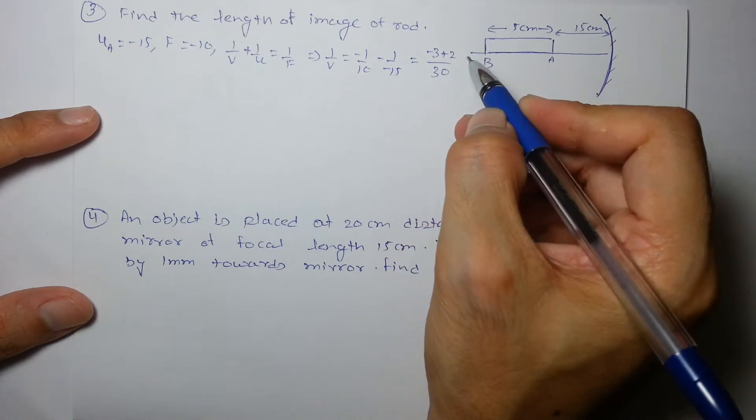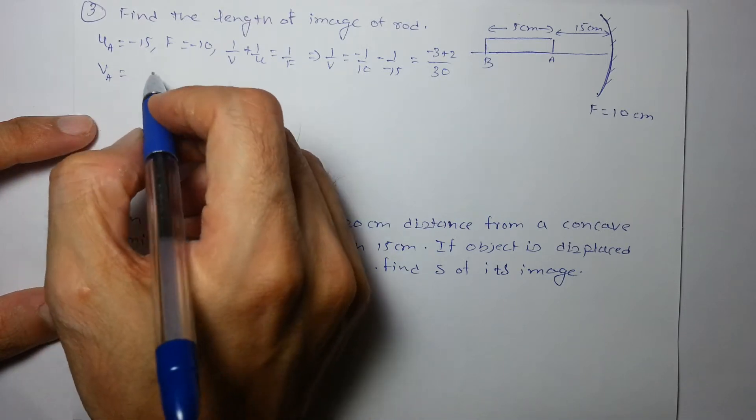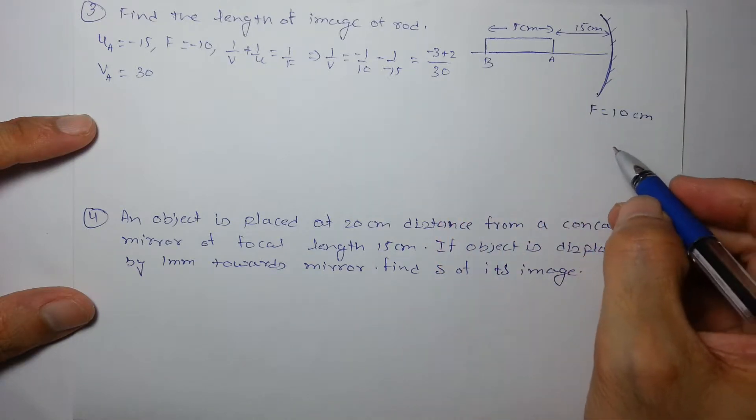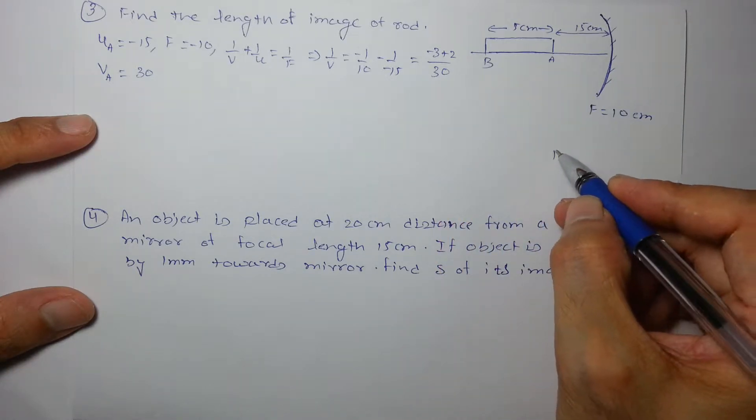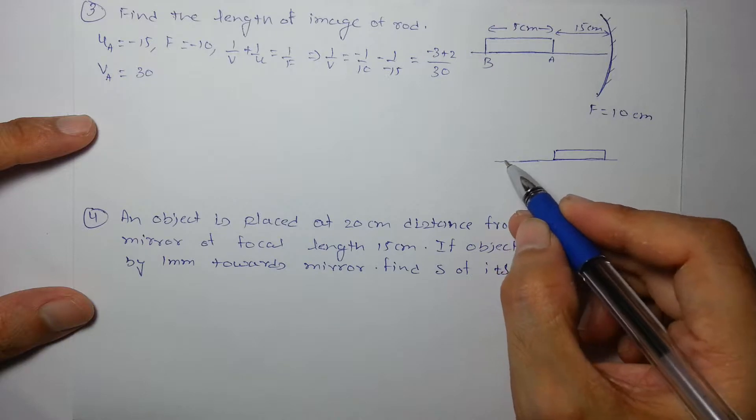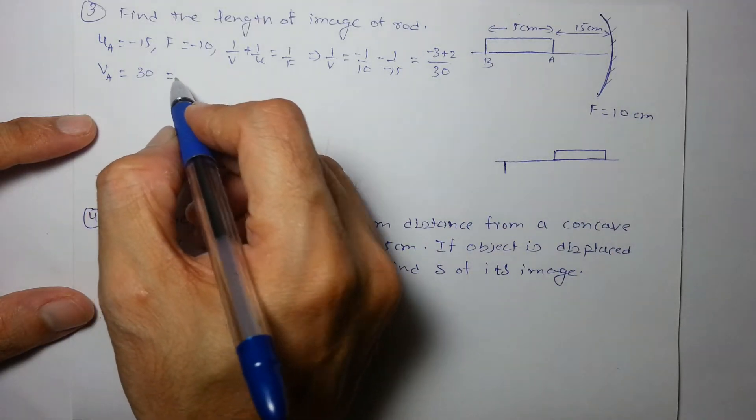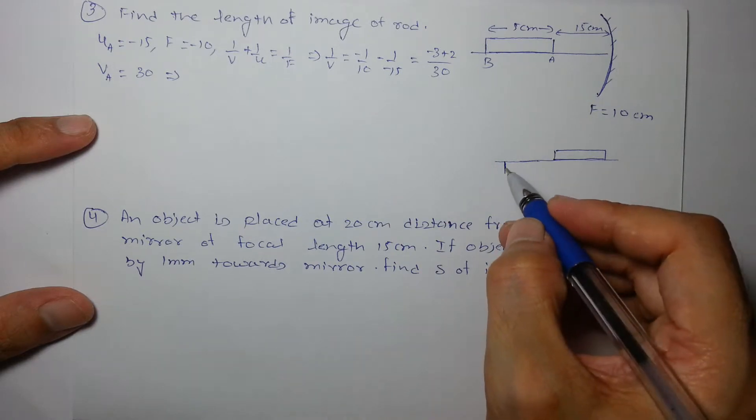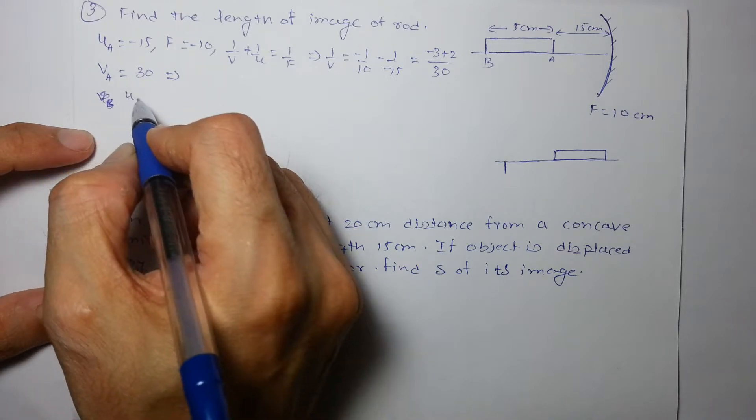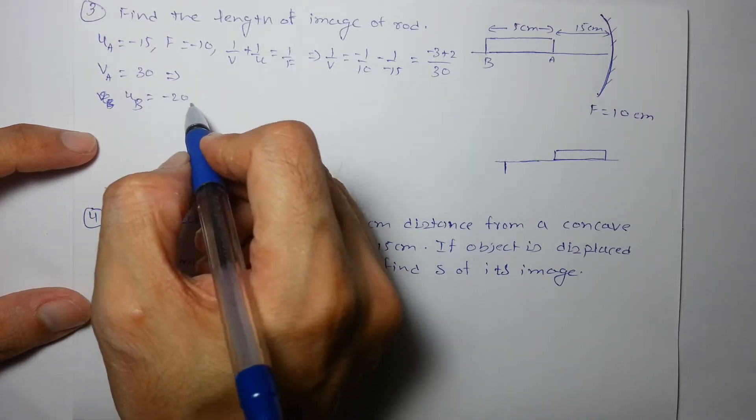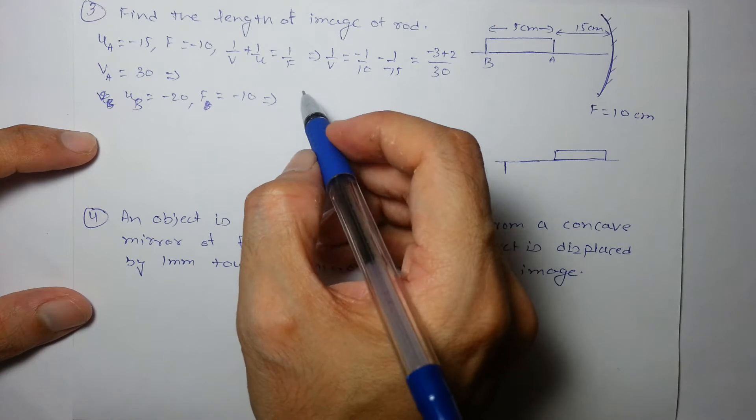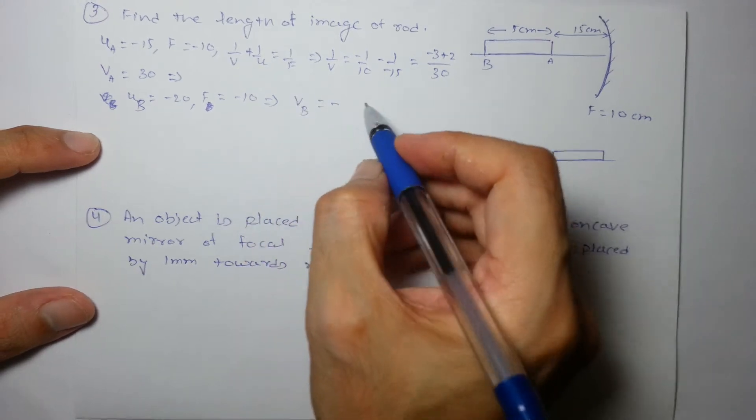v comes out to be v_A is 30. So the location of A will be here. This is the rod and location of point A will be somewhere here. And location of B, for v_B first of all u_B is minus 20, f is minus 10. On solving using the same expression, v_B will come out to be minus 20.